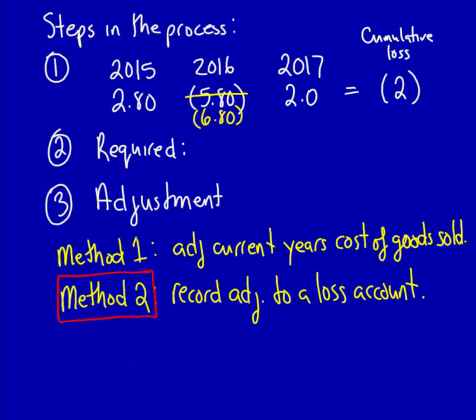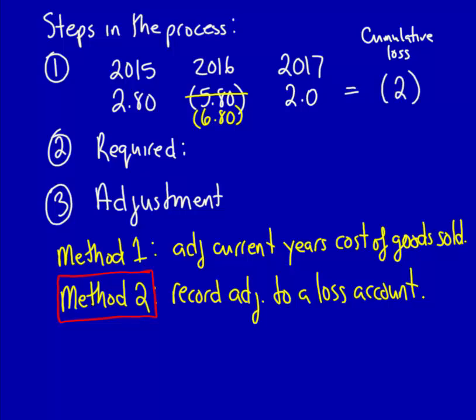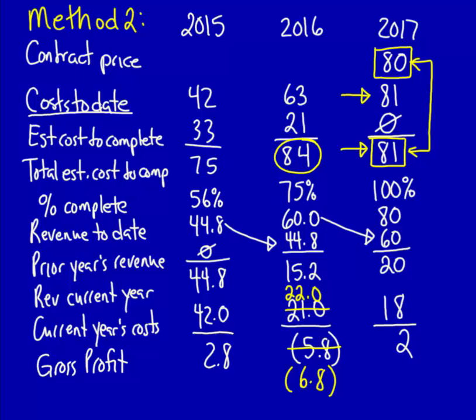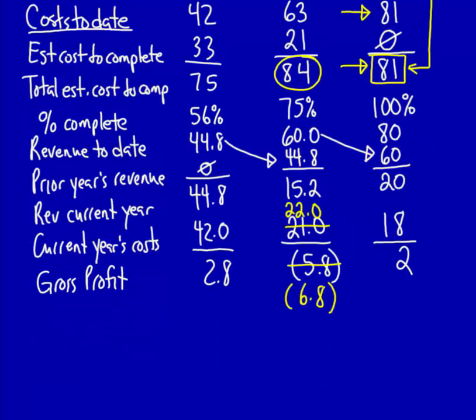Let's see how this would work under Method 2. For Method 2, we don't adjust the cost of goods sold; instead, we use a separate account to record the adjustment. We already have 2015, 2016, and 2017 recorded before the adjustment, giving a 2017 gross profit of $2 and a cumulative loss to date of $2. The required loss is $80 selling price minus $81 cost to date, equaling a loss of $1. We need a positive adjustment (a credit) to reduce the loss down to $1. In 2017 we record an expected loss recovery on construction contracts of $1, giving an adjusted gross profit of $3.